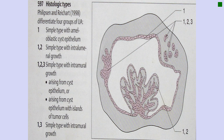On a radiograph, you notice an impacted tooth with a unilocular radiolucency around it. Whenever you see an impacted tooth with a unilocular radiolucency, the first differential diagnosis is a dentigerous cyst — you are absolutely right. However, the second most important thing to consider is unicystic ameloblastoma. A unilocular radiolucency around an impacted tooth is an important differential diagnosis for unicystic ameloblastoma.